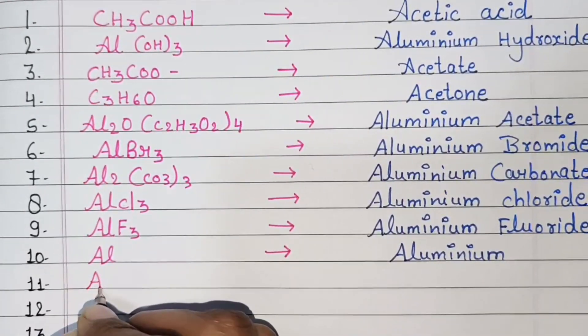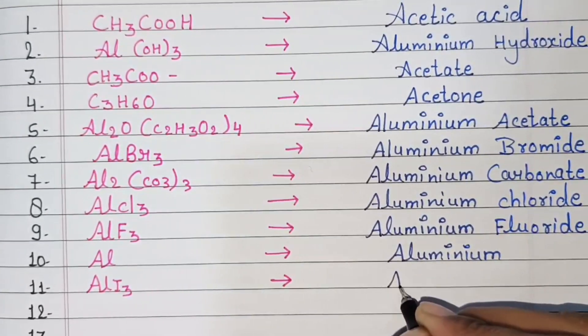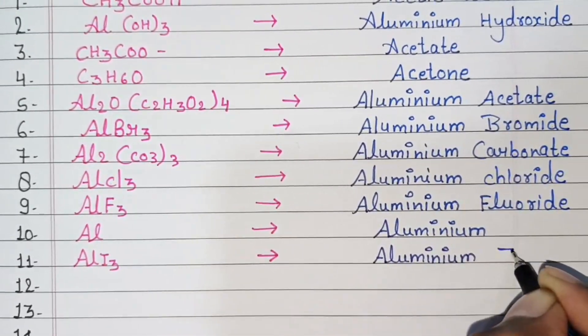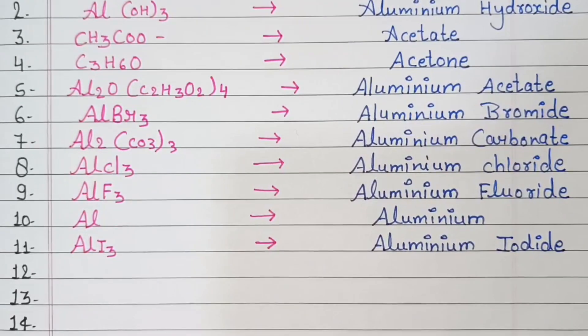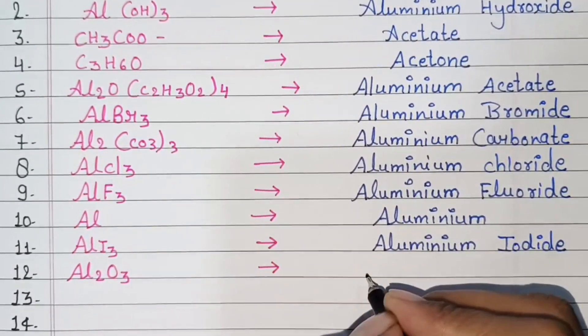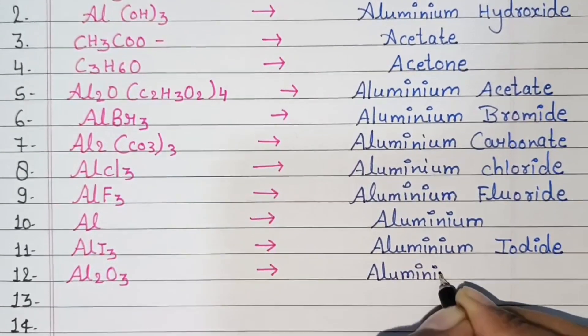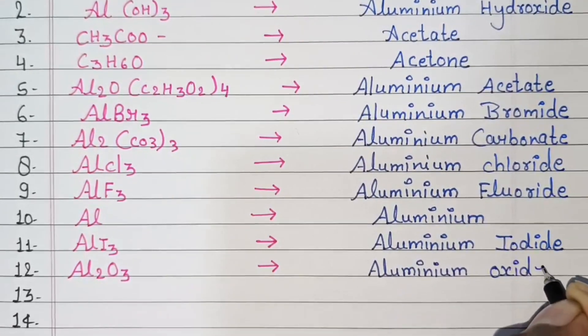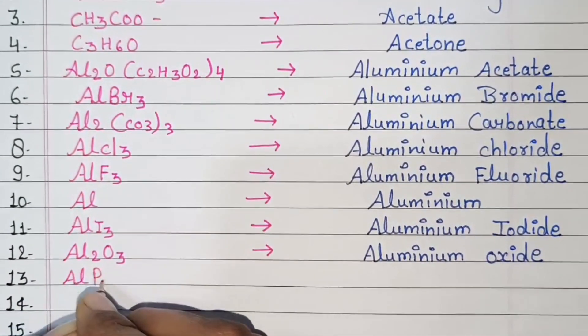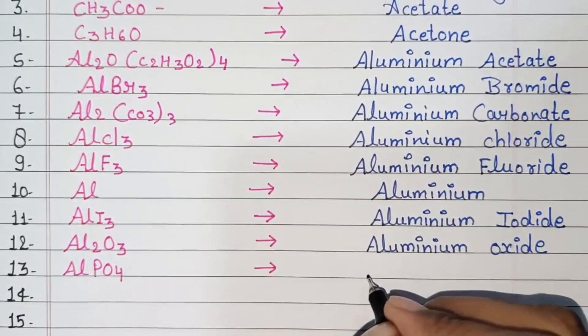AlI3, aluminum iodide. Next, AlPO4, aluminum phosphate.